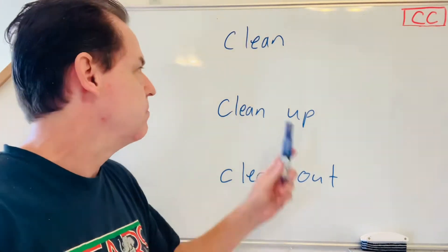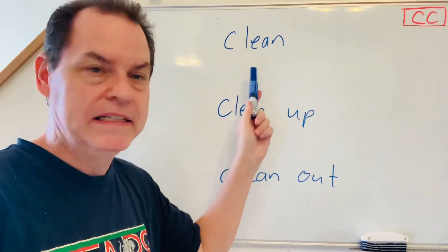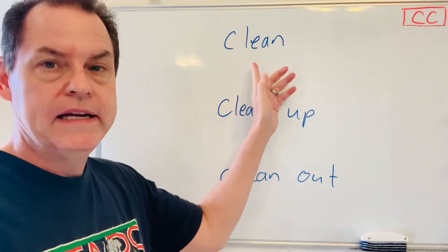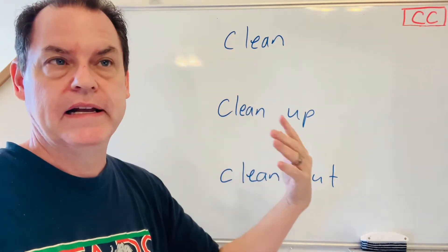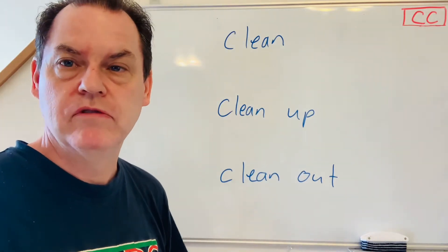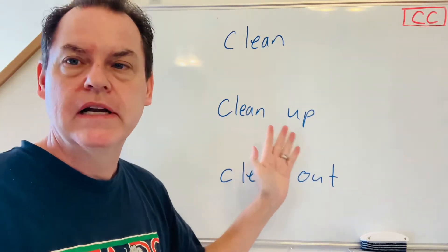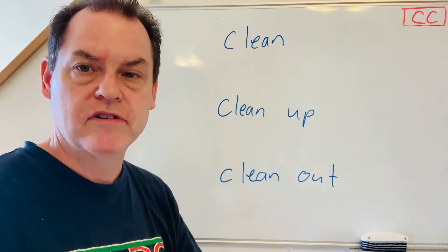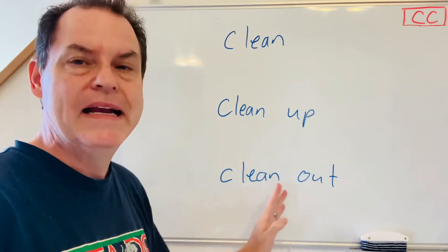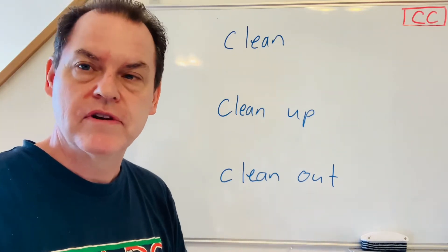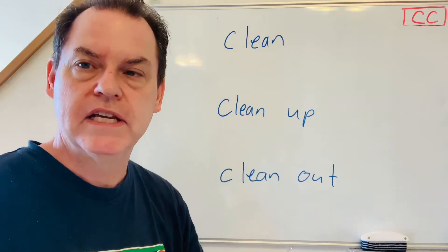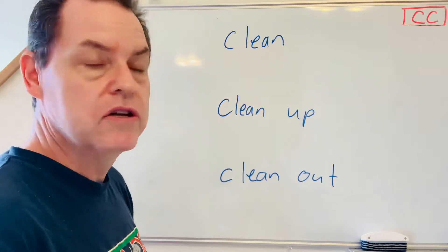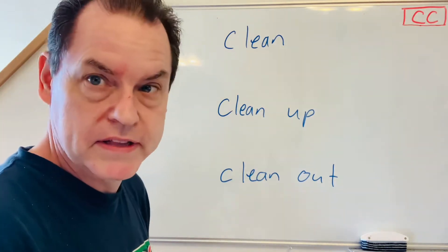So today's lesson is going to be the difference between 'clean,' 'clean up,' and 'clean out.' Clean is just to clean, like a messy room — I have to clean my room. Clean up is after you've done something and made a mess, like clean up your toys or clean up after cooking. Clean out is when you sort things and decide what to keep and what not to keep — so you clean out your closets. Let's do some examples.